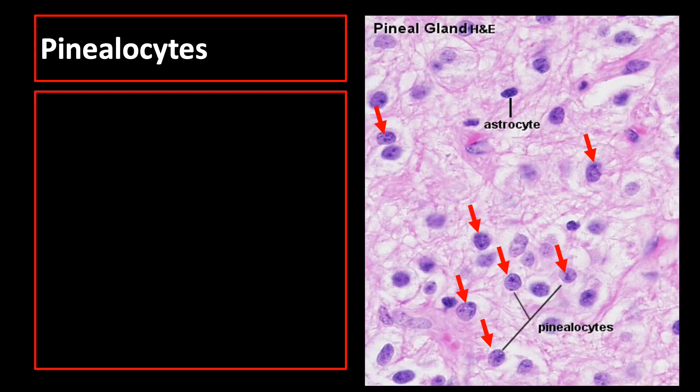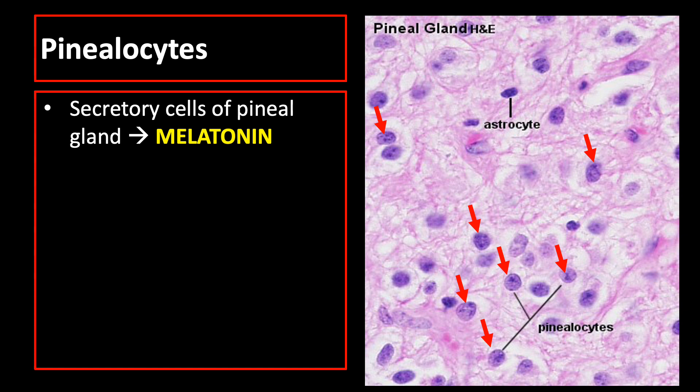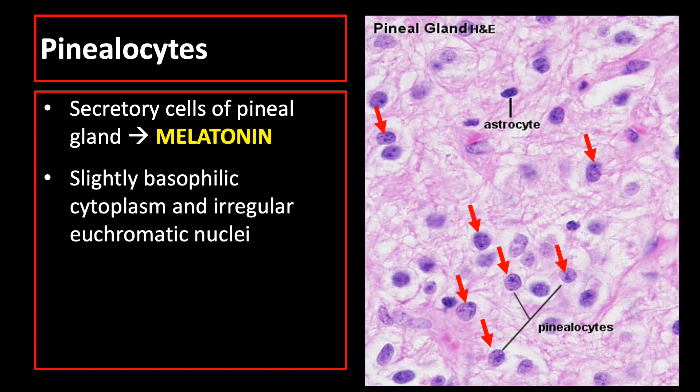The most abundant cells in the pineal gland are called pinealocytes, as pointed by red arrows, which are the secretory cells of the pineal gland. These cells produce melatonin, which maintains the body's circadian rhythm. Pinealocytes have slightly basophilic cytoplasm and irregular euchromatic nuclei. Since it is euchromatic nuclei, the chromatin are less dense, so the nucleus stains lighter.